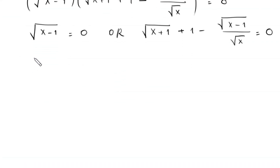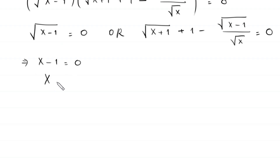...either this expression root (x plus 1) minus root (x minus 1) minus root (x minus 1) over root x is equal to 0. From the first factor, if we square both sides, this implies that x minus 1 is equal to 0, so x is equal to 1. This is the first solution of this equation.